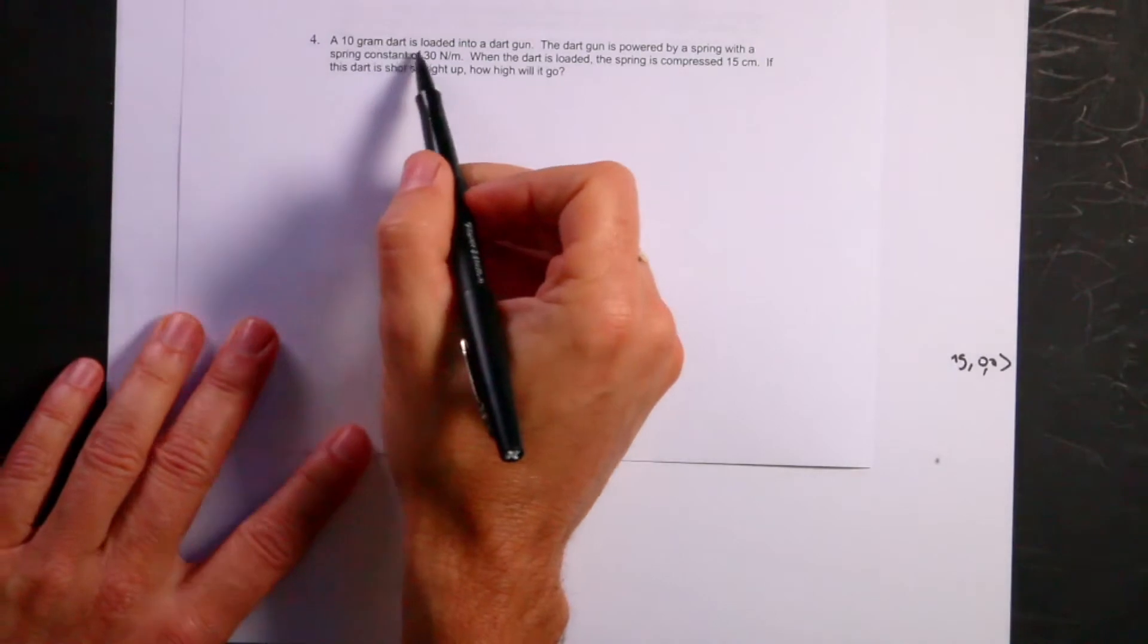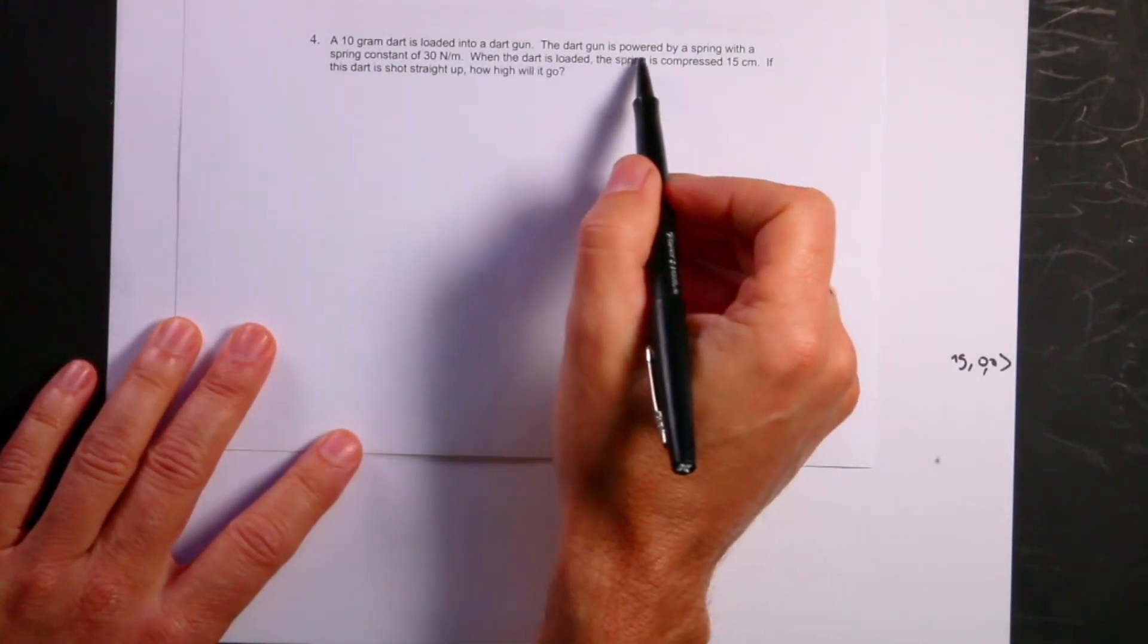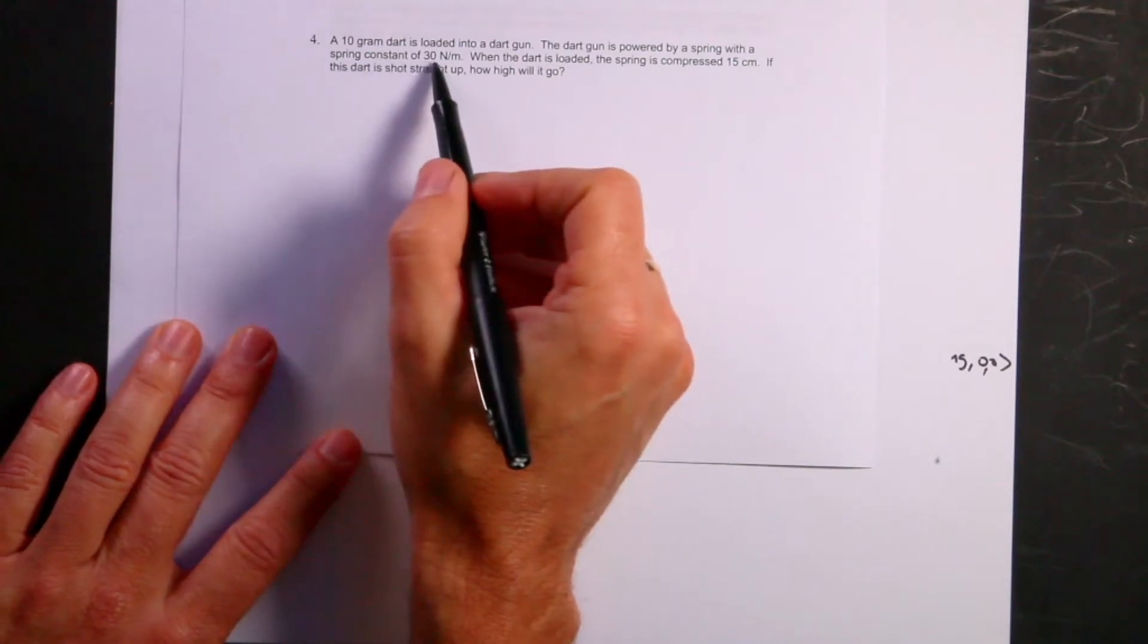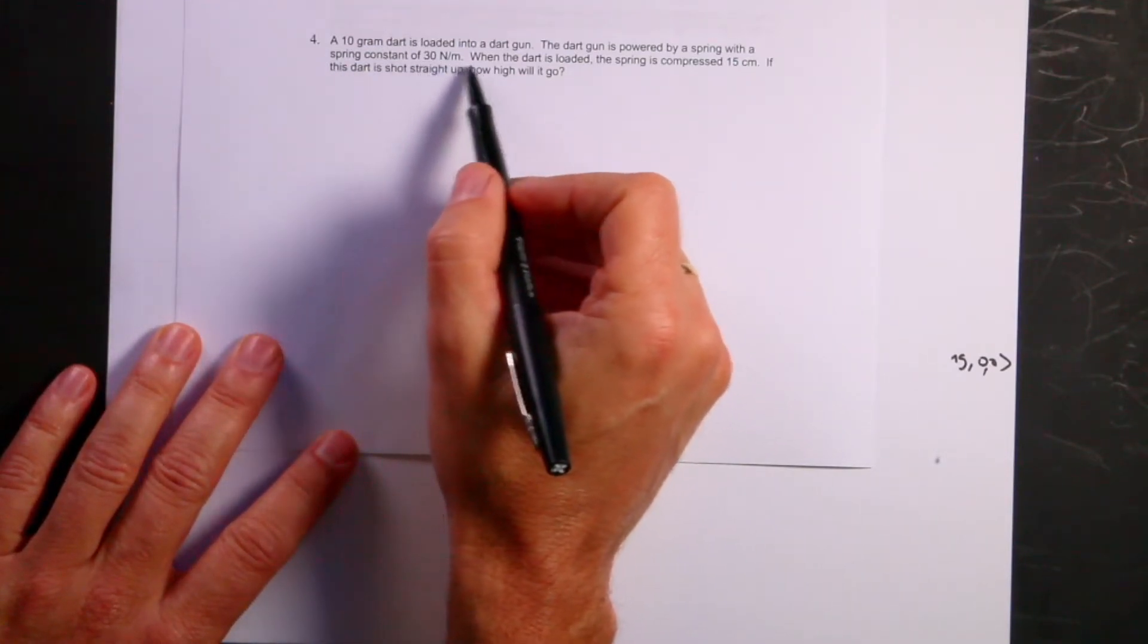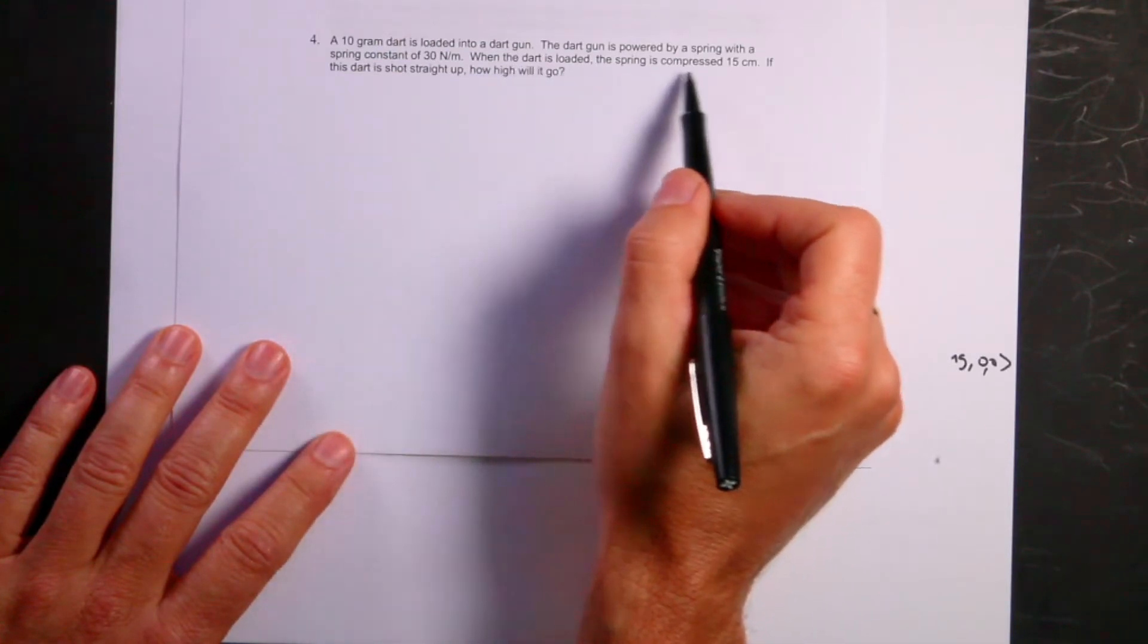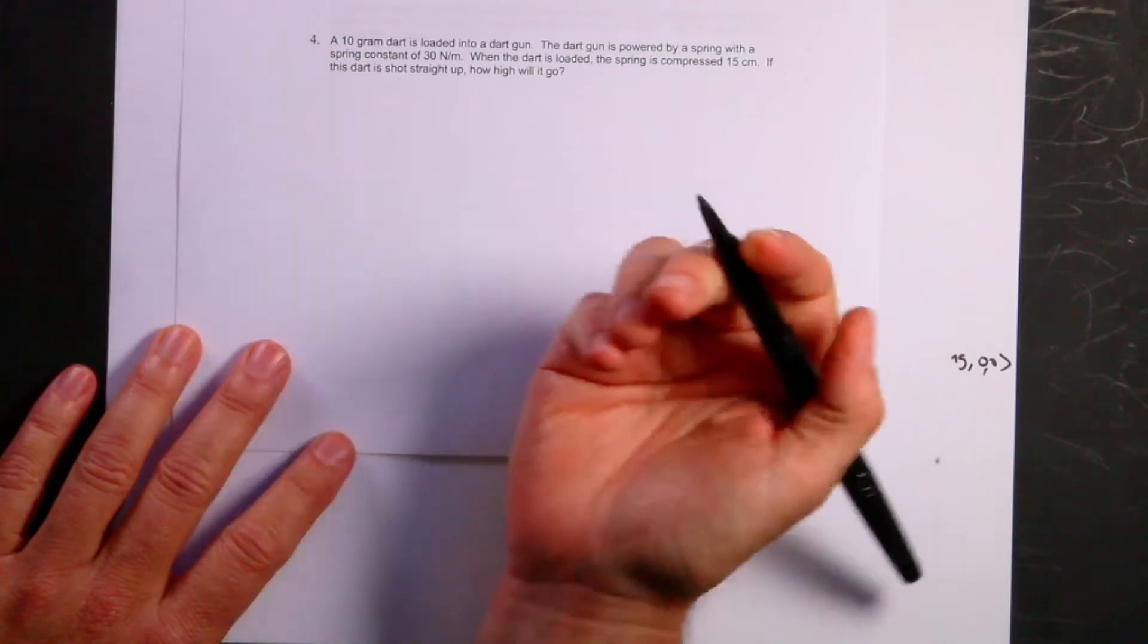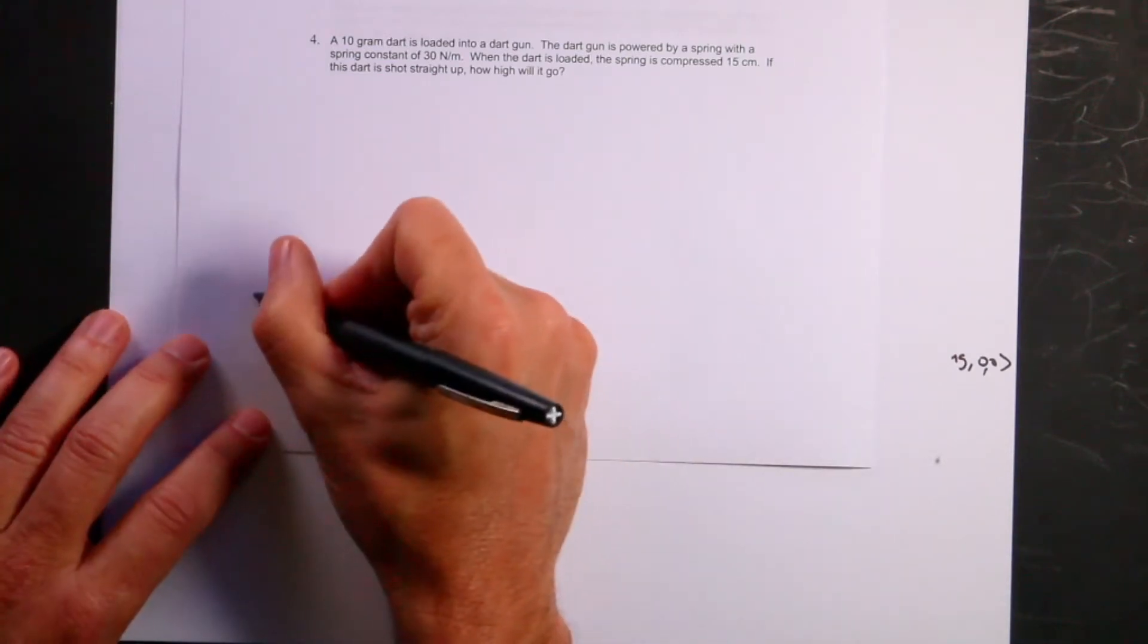A 10-gram dart is loaded into a dart gun. The dart gun is powered by a spring with a spring constant of 30 newtons per meter. When the dart is loaded, the spring is compressed 15 centimeters. If the dart is shot straight up, how high would it go? Oh, this is actually a good problem. So let's start right here.